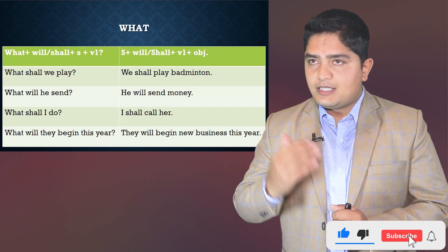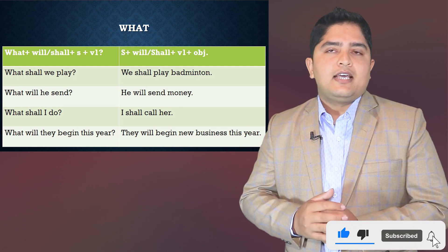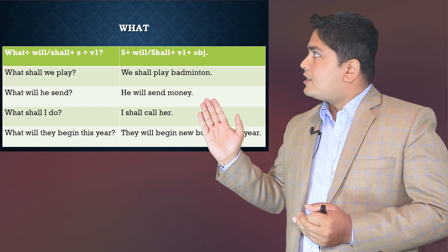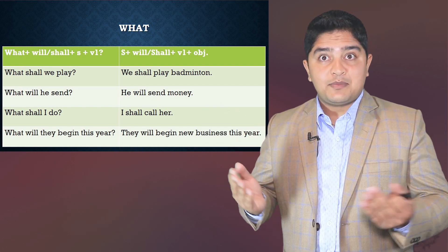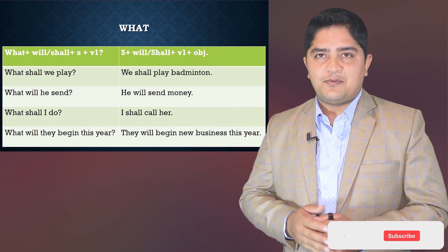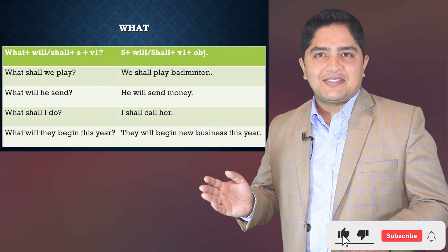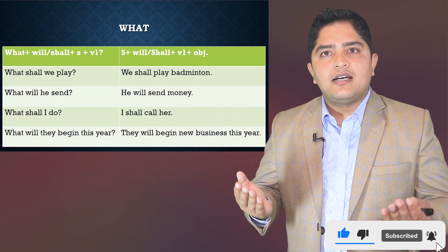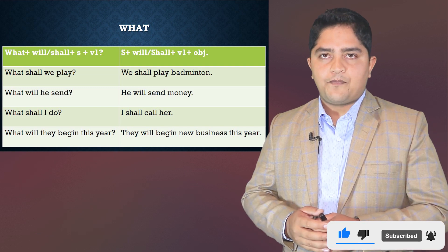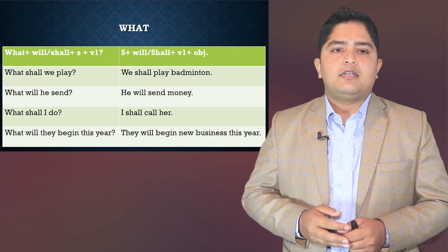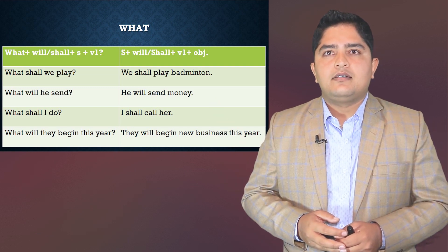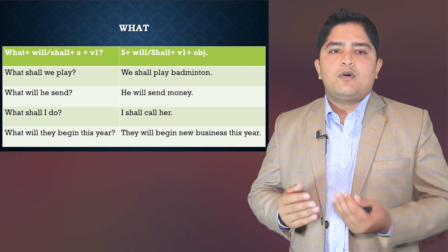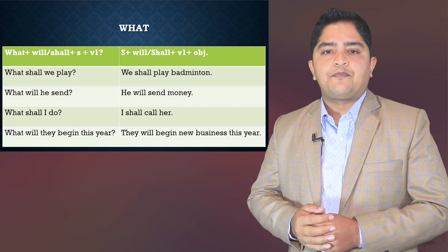You can see the structure on screen: What + will/shall + subject + verb(base form) + object for the question. And for the answer: Subject + will/shall + verb(base form) + object. For example: 'What shall we play?' — and the answer is 'We shall play badminton.'